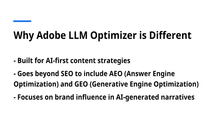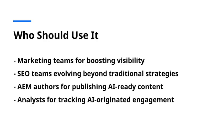Unlike traditional SEO tools, Adobe Optimizer focuses on AI discoverability — what content gets seen by AI agents and how it is interpreted. It combines insights from AEO (answer engine optimization), GEO (generative engine optimization), and LLM behavior to keep your brand at the forefront. Whether you're focused on brand visibility, lead generation, or content strategy, Adobe Optimizer provides the insights and control needed for AI-era success.